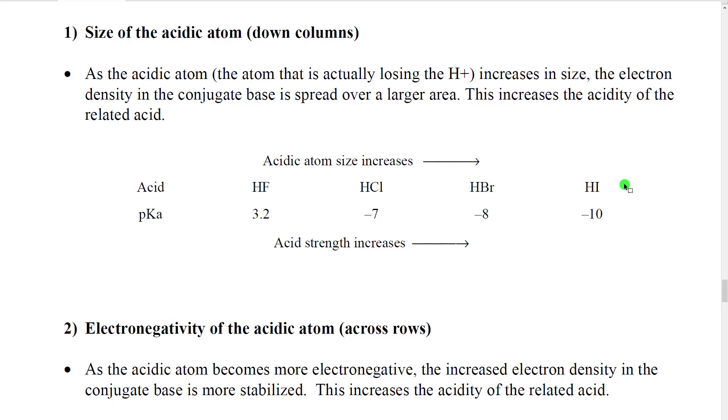This, in fact, is in the opposite direction of the trend of electronegativity. So, we see that atom size has a bigger effect than electronegativity, when we compare down columns.